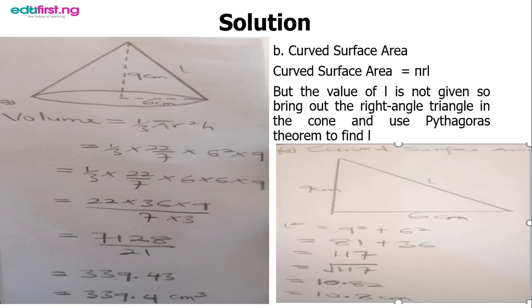The next one is to calculate the curved surface area. The formula is πrl. But let us not forget that we were not given l, the slanted height, from the equation.